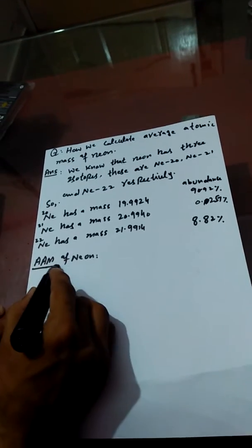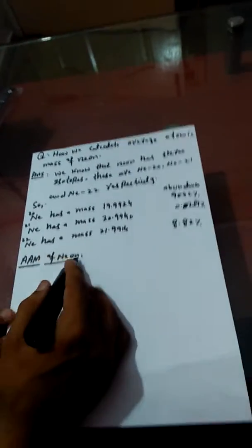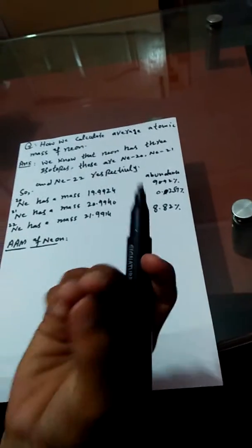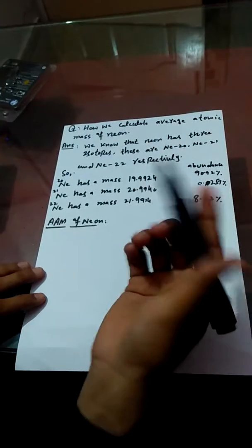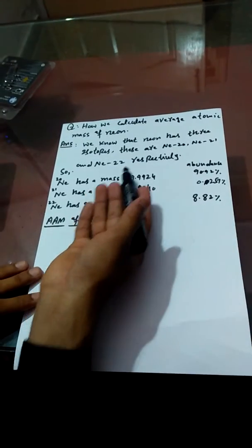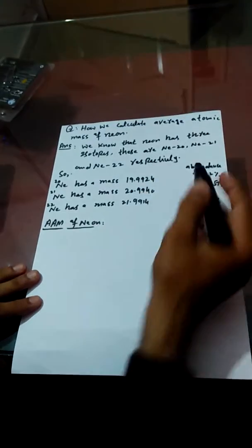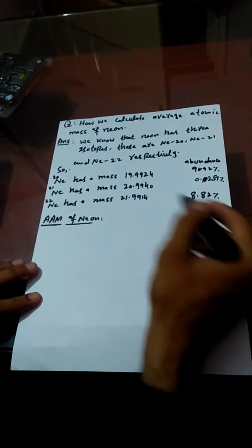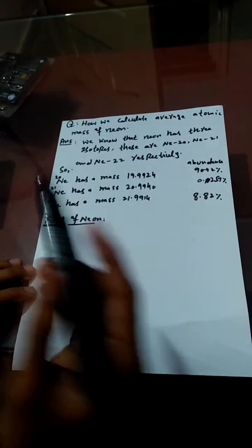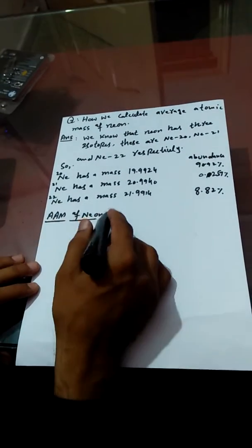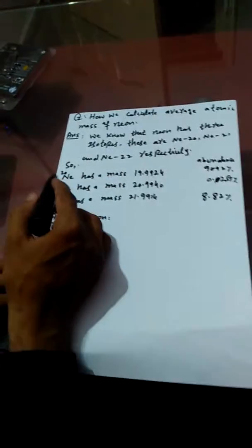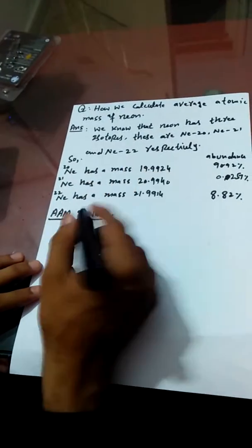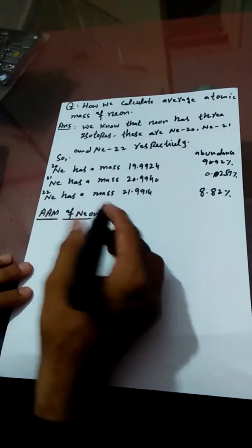To calculate the average atomic mass of Neon, we multiply the mass of each isotope with its isotopic abundance to get the average atomic mass. By this method, we multiply the mass of Neon-20 with its isotopic abundance.